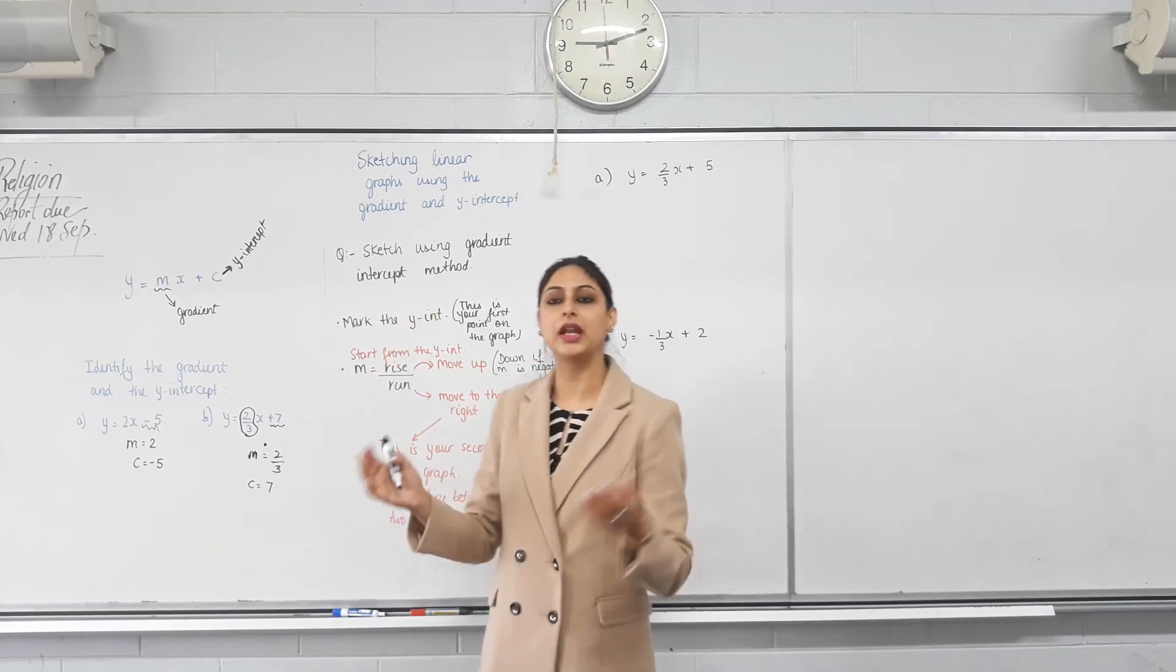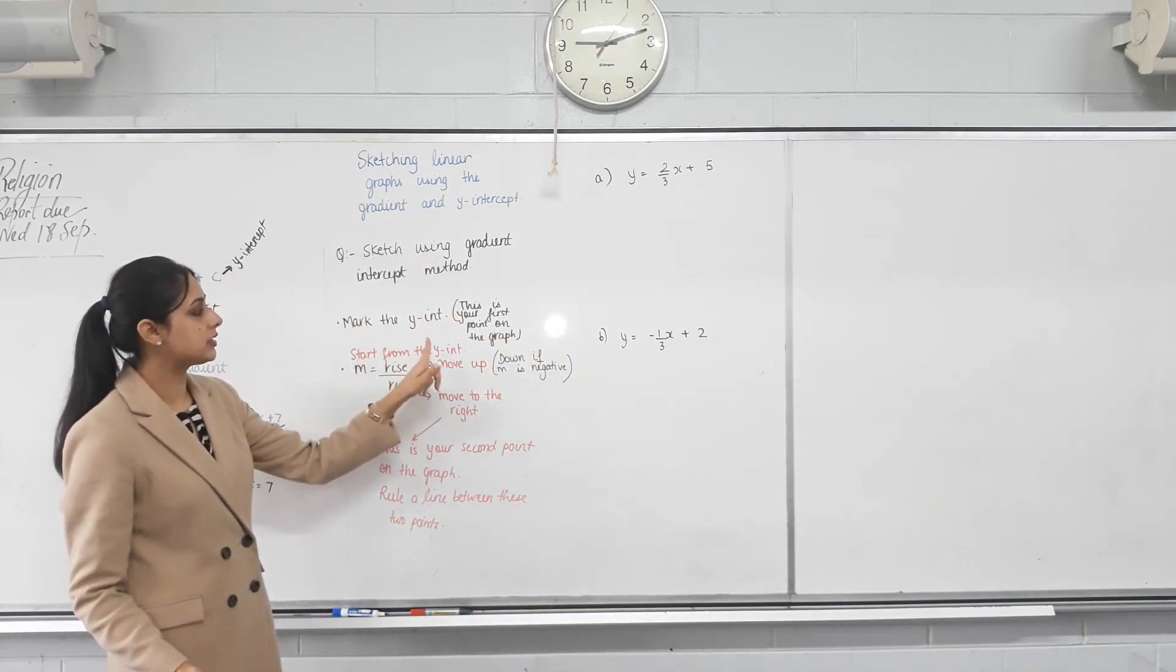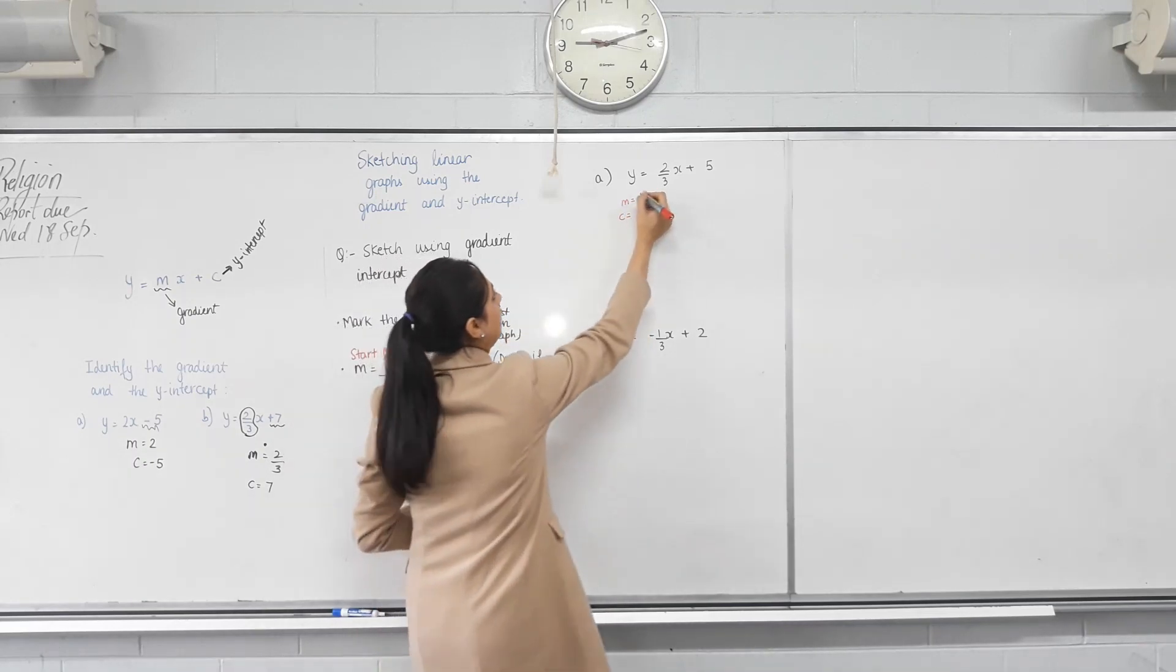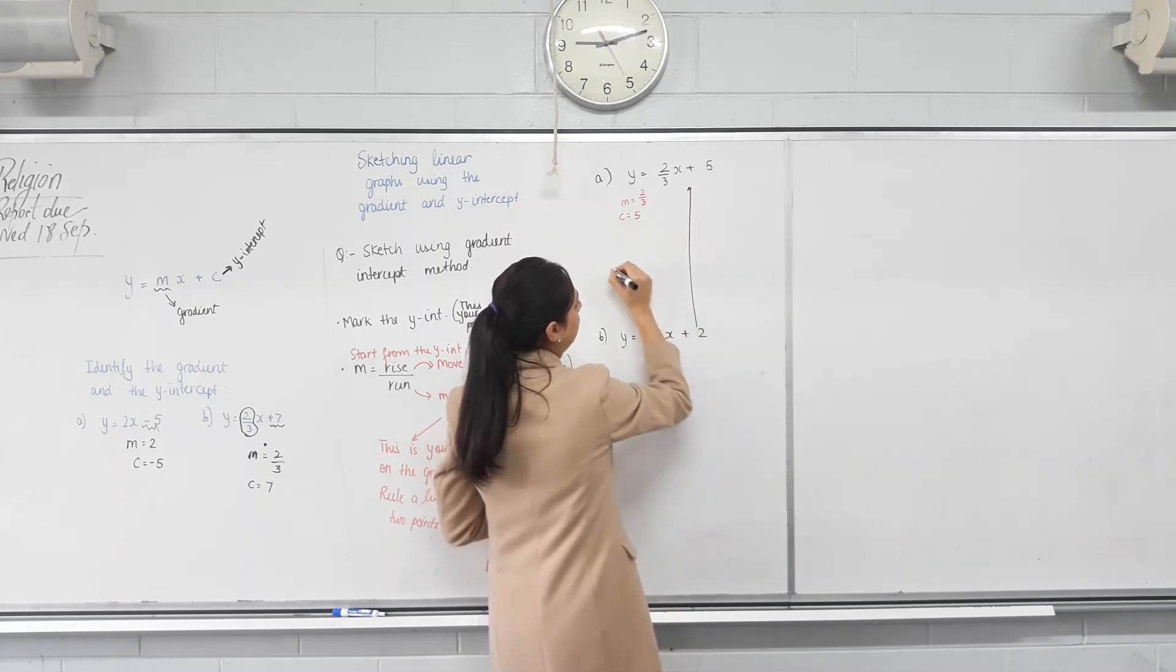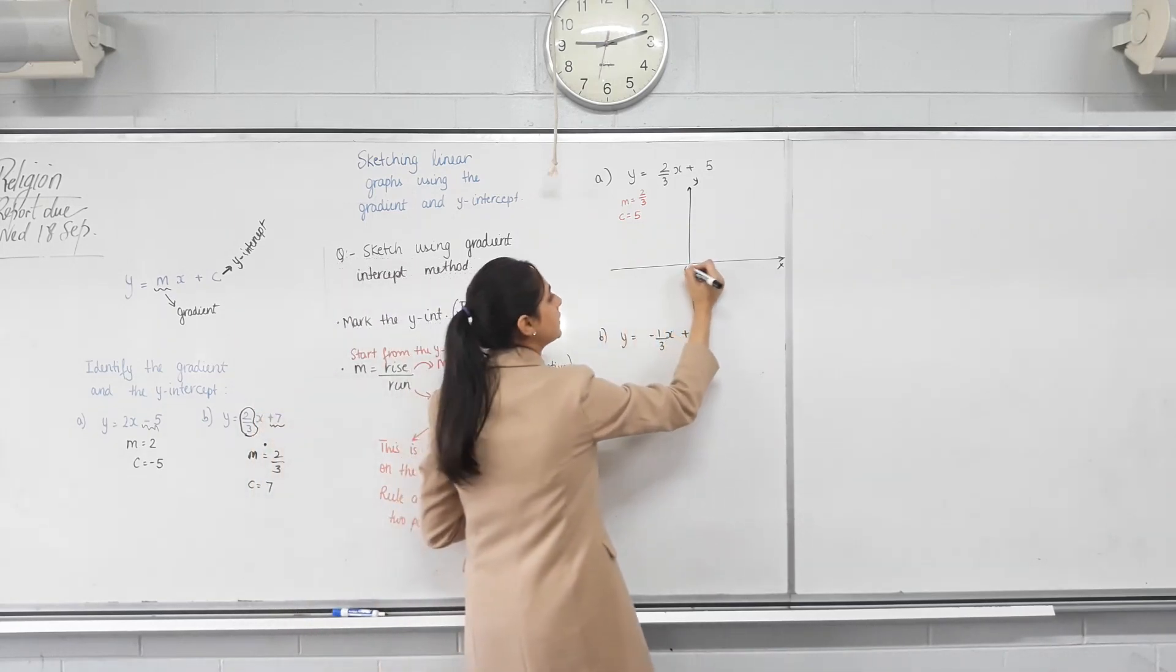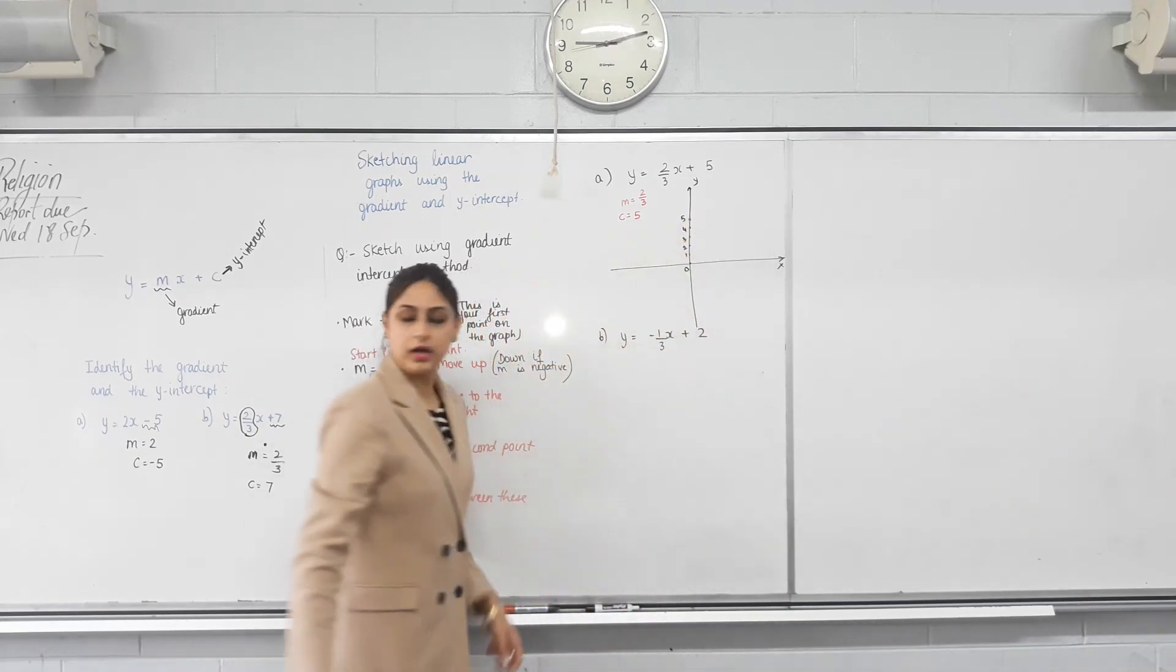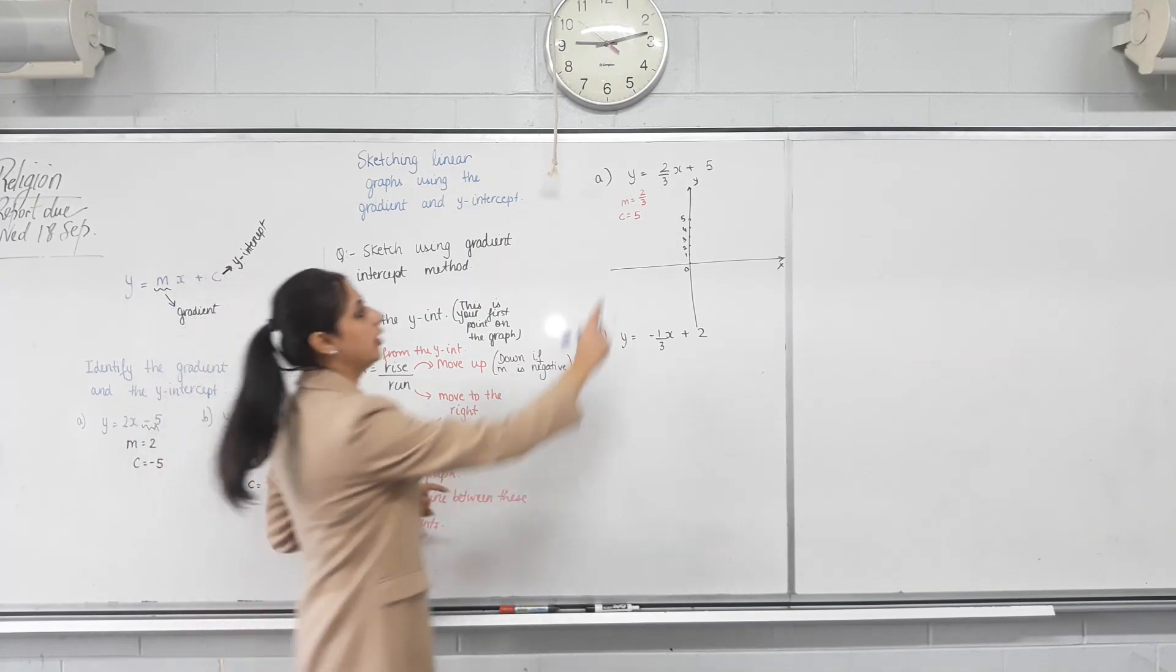Now, if it's in y-intercept form, we can actually sketch it easily. Right? Let's follow these steps. So, the first step is mark the y-intercept. This is your first point on the graph. So, first of all, what is the gradient of this line? And what's the y-intercept? What's the number multiplied with x? Two-thirds. And what's the y-intercept? Five. Five. Okay? So, that means the first point on the graph is five. Now, y-intercept is where it cuts the y-axis. So, that means on the y-axis, one, two, three, four, five. This is the first line, first point. Can we mark five on the y-axis? That's the y-intercept. Easy to do? Then, write your gradient as rise over run. Have you written it as a fraction?